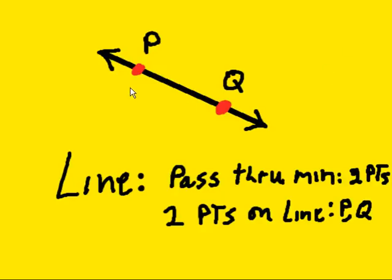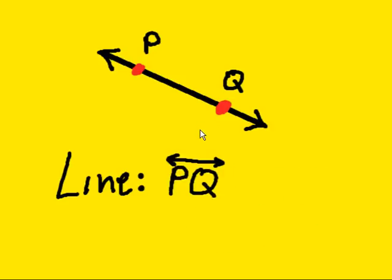Let's call those two points P and Q, and we can name the line PQ. We would write it this way, PQ with an arrow over it.